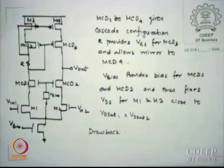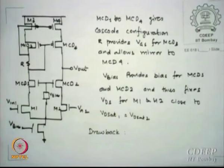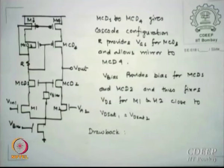One possibility is to cascode the diffamp itself. Here is the circuit — I introduce MCD1, MCD2, MCD3, MCD4: four transistors added to the normal M3, M4, M1, M2 combination to make a cascode structure. I connect from the gate to the drain of transistor D3, and with a small resistor R from MCD3, the output is taken there.